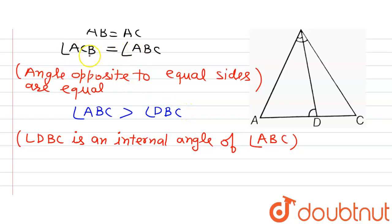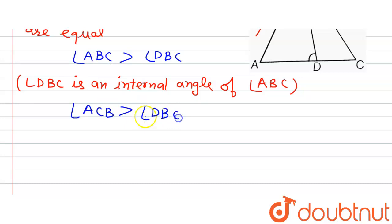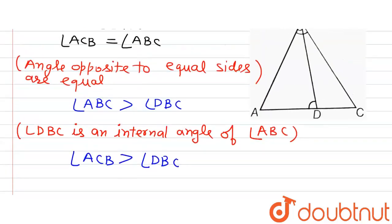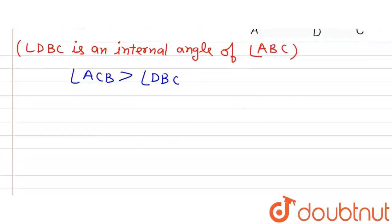Now we know that angle ABC is equal to angle ACB. So we can replace angle ABC by angle ACB: angle ACB is greater than angle DBC. And because angle ACB and angle DCB are one and the same thing, we can write angle DCB is greater than angle DBC.